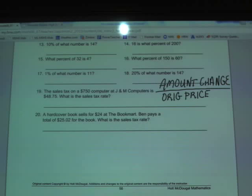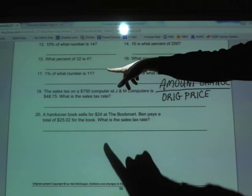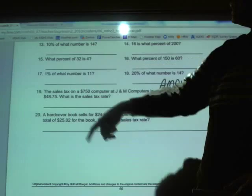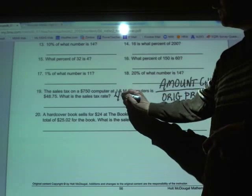So if we look at 19, it says the sales tax on a $750 computer at J&M Computers is $48.75. What is the sales tax rate? So they've already found the amount of change, because they're telling you that the price is going to increase by $48.75. So the price is going to change by $48.75.